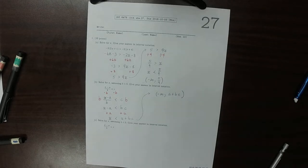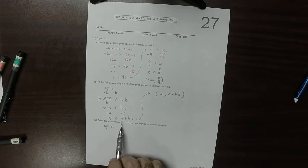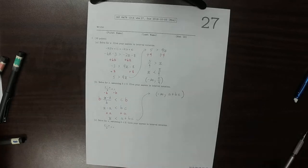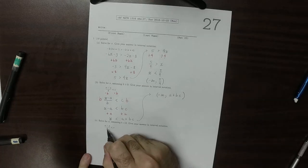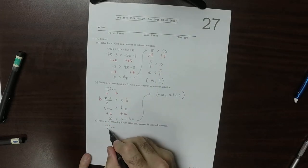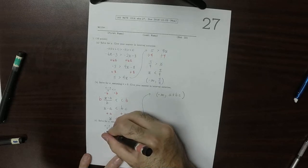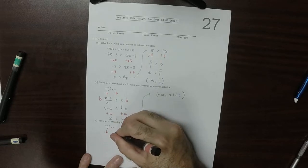So now, for part c, it's a different matter, because now we want to solve for x, and this is assuming that b is negative. Now, the opening operation is the same as for part b. We want to get the x by itself, so we need to multiply both sides by b. So we multiply by b on the left and on the right.